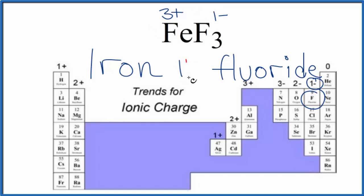Because it's three plus, we write a Roman numeral three between the iron and the fluoride. And the name for FeF3 is iron three fluoride. This three, that's the charge here on the iron, the transition metal.